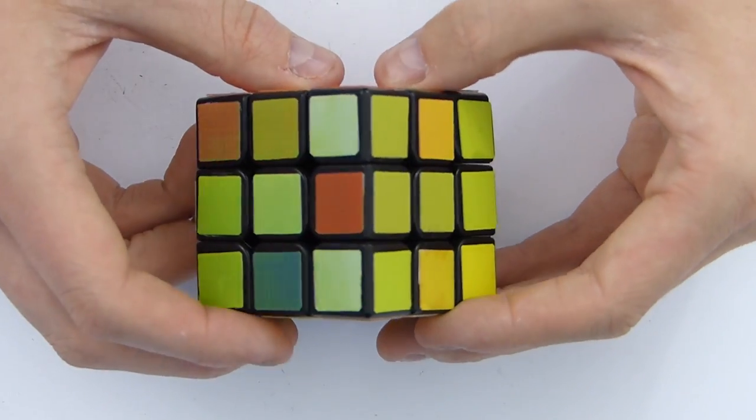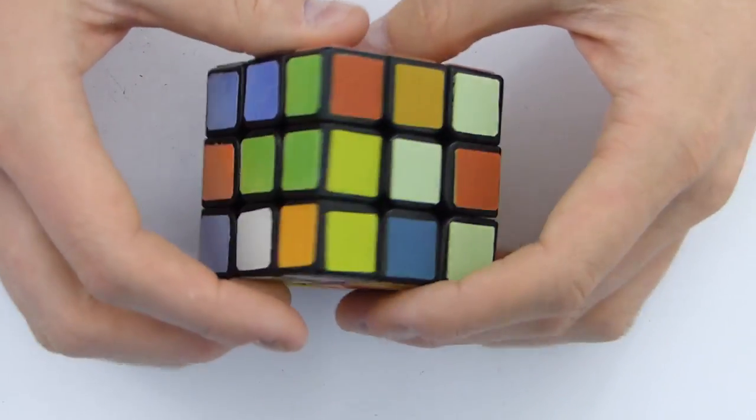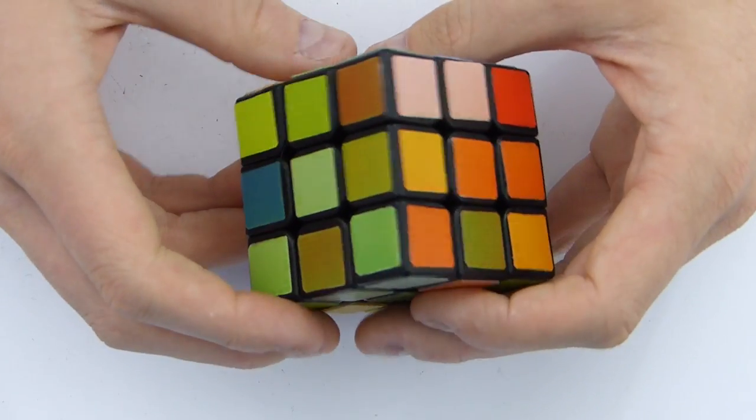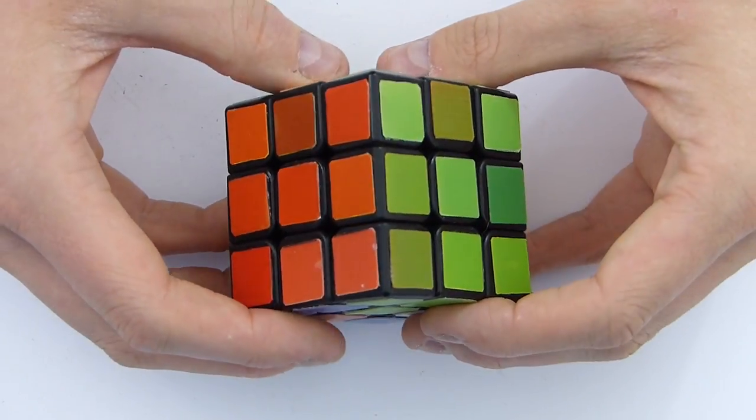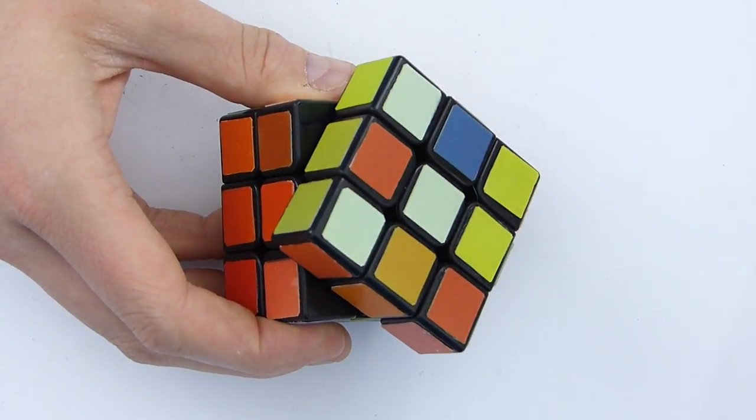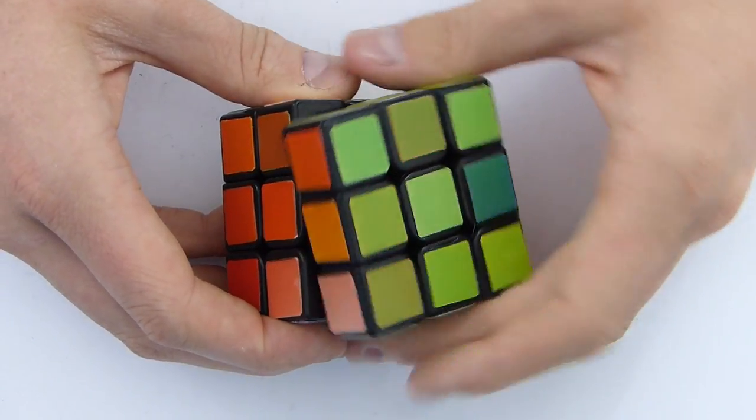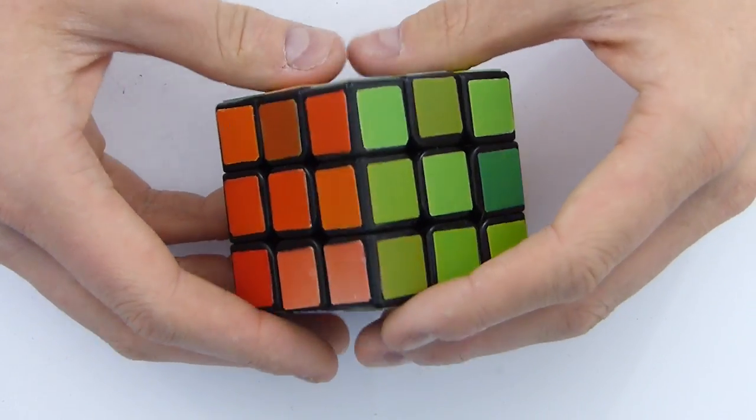So what looked like a simple Rubik's Cube from this angle is actually completely different. You see, this is just green and red, right? Except when you turn it, boom, it changes color.